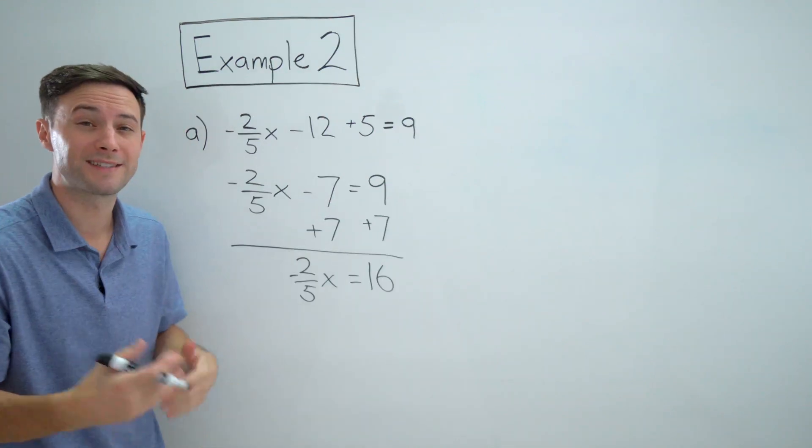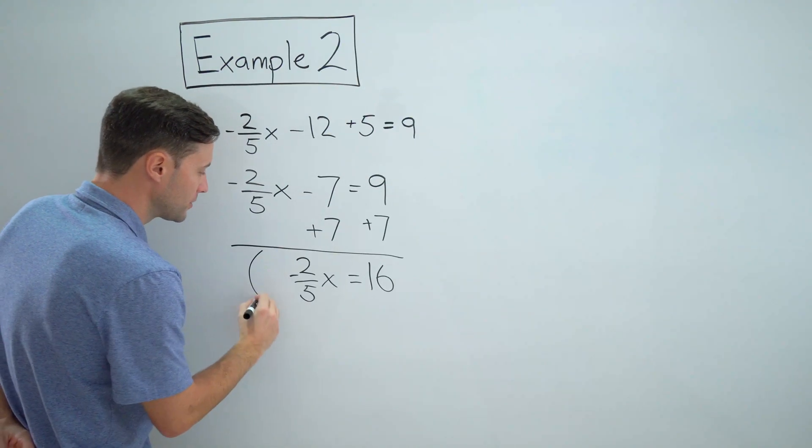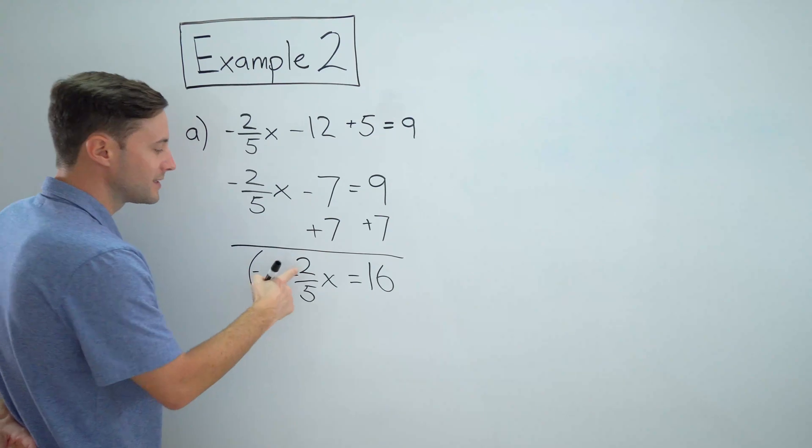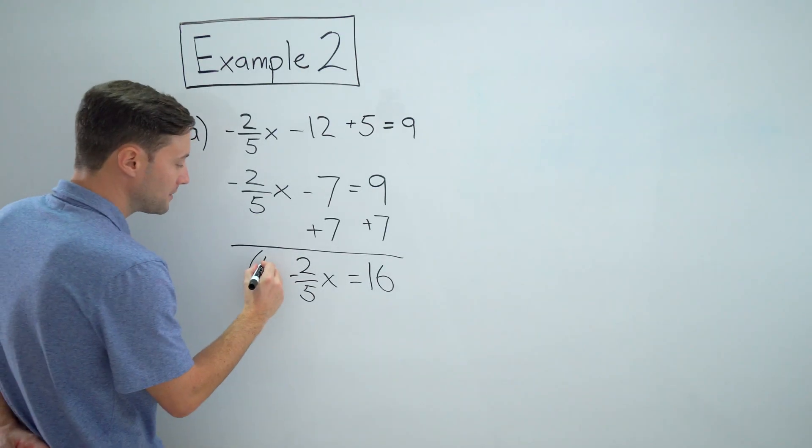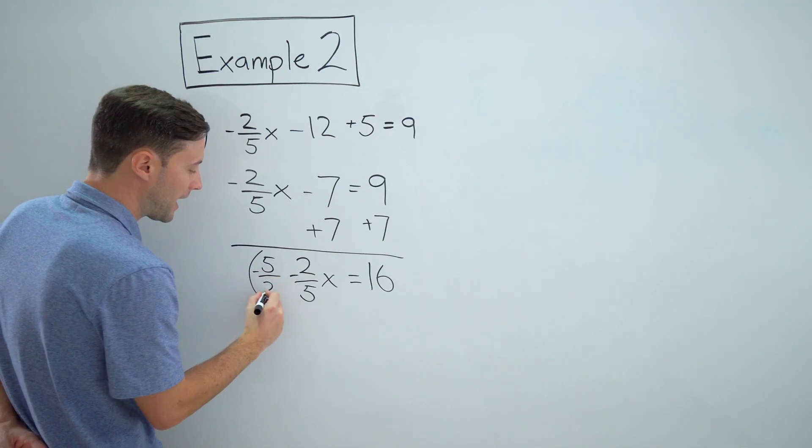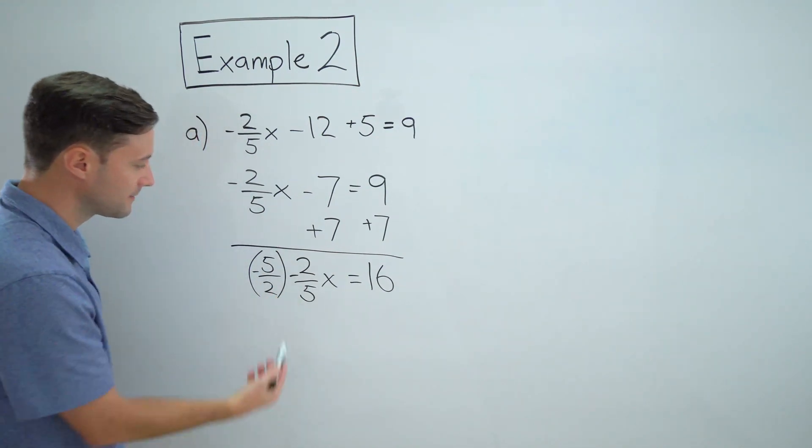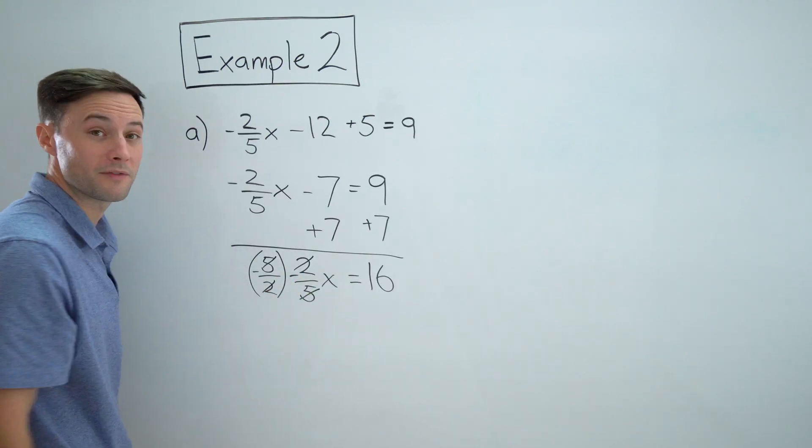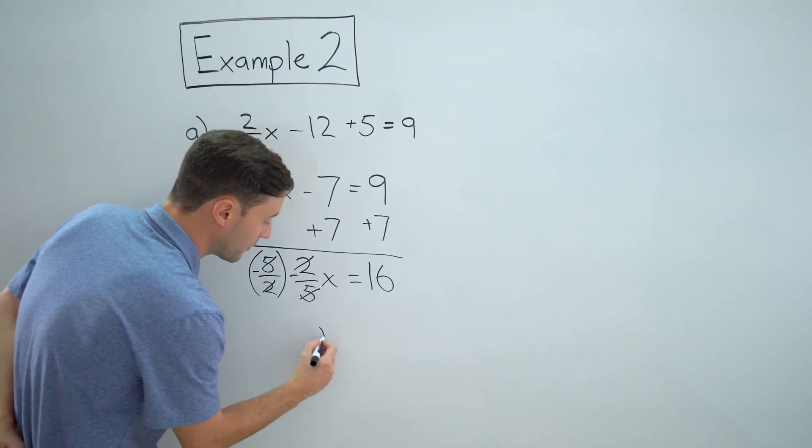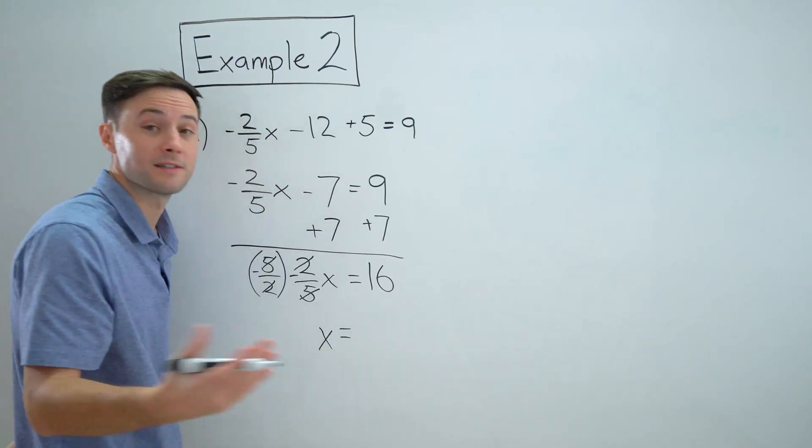So what I'm going to do instead is I'm going to multiply both sides by the reciprocal of two-fifths, which is five-halves. So times negative five-halves. And if you notice, that simplifies, and you're just left with x, which is exactly what we want.